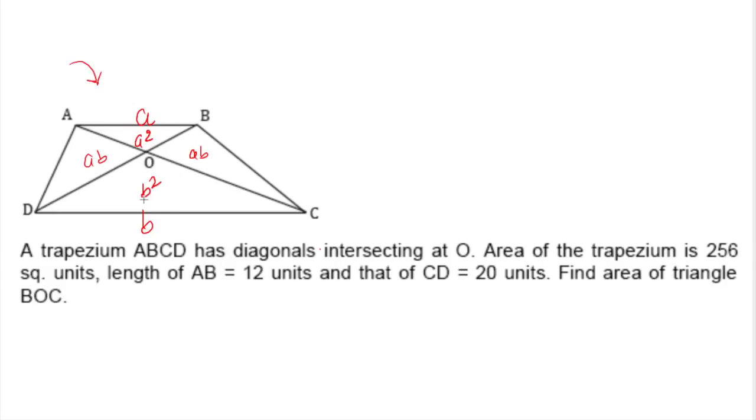This is a classical ratio of the areas within the trapezium if you have the parallel side values or the ratio. So we can say if we need to find the OBC area, it is OBC upon (a plus b) whole squared.